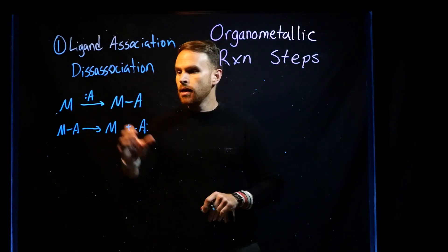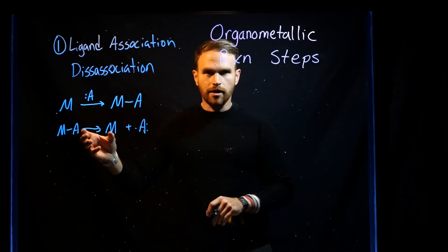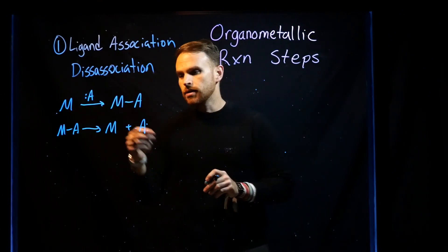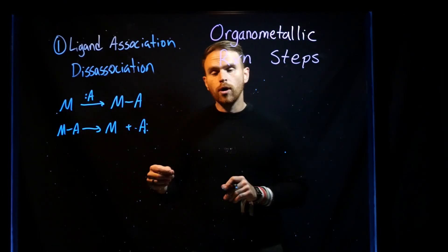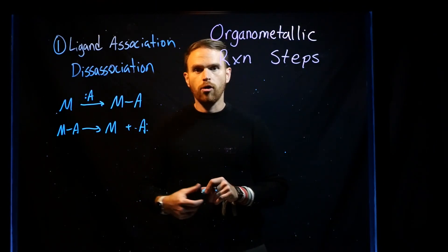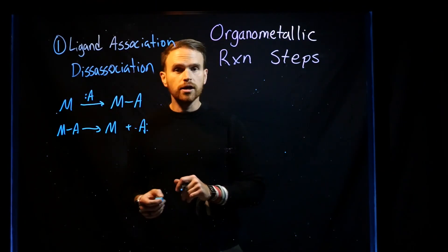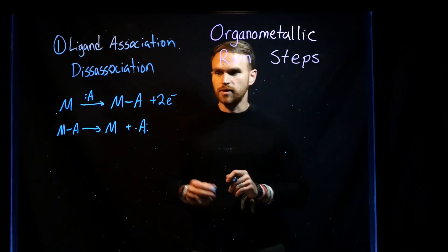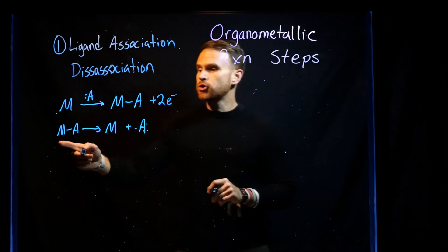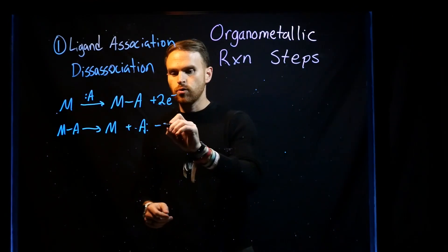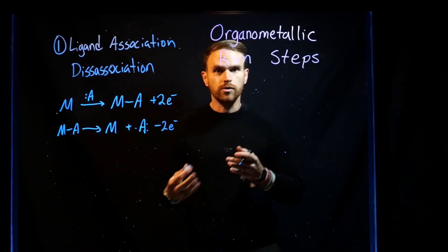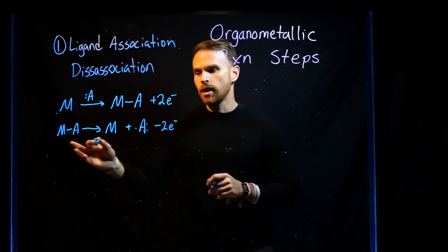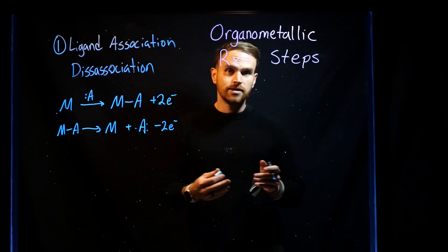When this happens, the oxidation state of the metal remains unchanged in both ligand association and dissociation. What does change is the overall electron count. For association, you are increasing the electron count of the organometallic species by two electrons. During dissociation, you are losing two electrons — gaining two via association and losing two via dissociation.